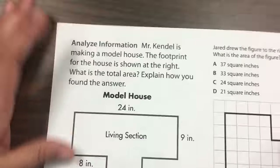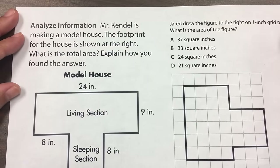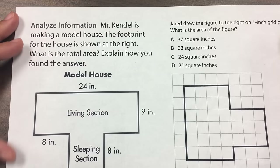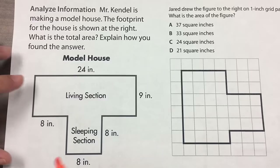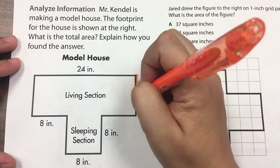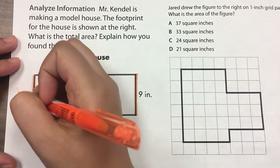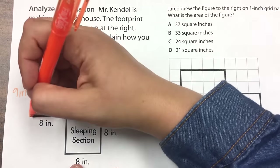Now let's try some word problems. Mr. Kendall is making a model house. The footprint for the house is shown at the right. What is the total area? Explain how you find your answer. So we're only looking for area this time. First I need to fill in the numbers that are missing. So if this is 9 on this side, then this also has to be 9 on the opposite side. Now I'm going to section off this rectangle here — that's one rectangle.